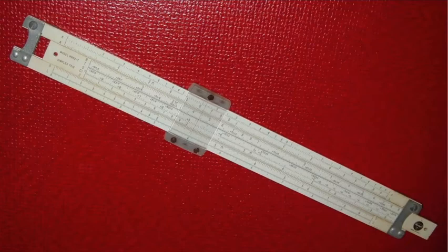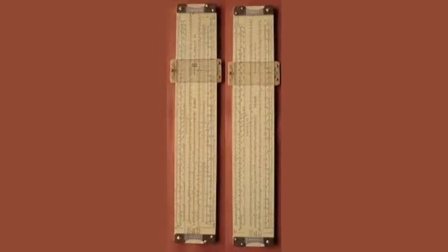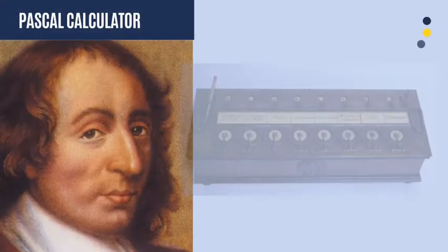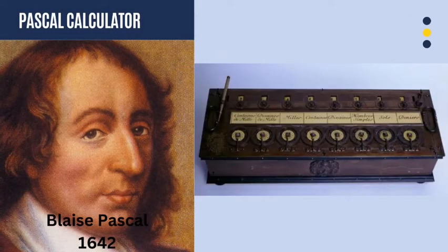William Oughtred's invention was used in performing logarithm calculations, which is why he is called the father of the logarithmic function. The slide rule was mainly used for multiplication and division, and also for scientific purposes.